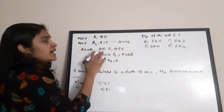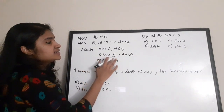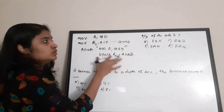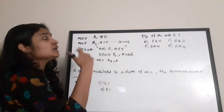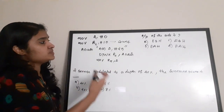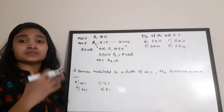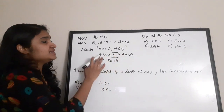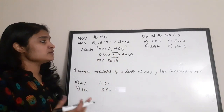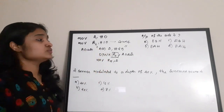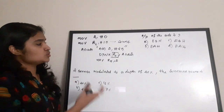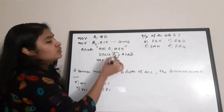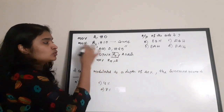Then again this is a loop: 'Add A, hash 25' and DJNZ R2. That is the operation happening in this code — adding A with 25 repeatedly. That is, 25 has been added to register A multiple times. Whatever content is present in register A, it has been added with 25 again and again till R2 is non-zero. DJNZ means decrement and jump if non-zero. So the moment R2 is zero it will jump out of this loop.